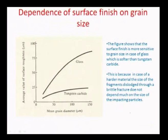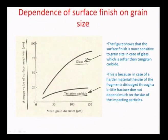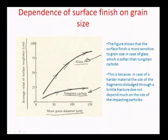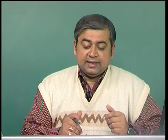Another interesting factor is what happens for a brittle and a harder material — comparing average surface roughness values in microns between tungsten carbide and glass. With increasing mean grain diameter, there is a critical grain diameter beyond which grain crushing takes place. Importantly, if the surface is more brittle, the surface roughness that results would be higher compared to a harder material, because a brittle material is more amenable to brittle fracture — greater chunks come out, forming larger craters, and because of larger craters the overall average roughness is higher.